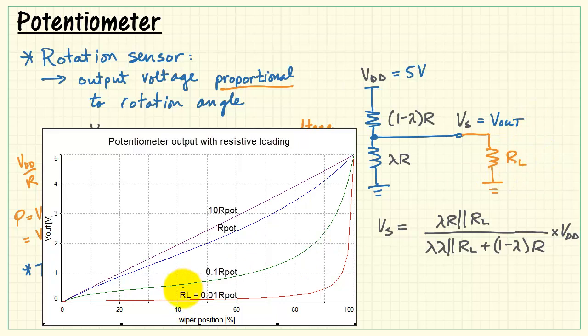I'm looking at various values of R sub L. This red trace on the bottom results from choosing a load resistance that is 100 times smaller than the resistance of the potentiometer. You'll notice we get a very non-linear looking output.